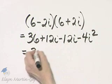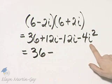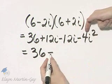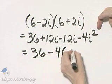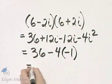And then we have 36 minus, now remember, i squared is negative 1, so be very careful. Here's this minus sign, there's my 4, and then instead of i squared, I write negative 1. And let's go ahead and simplify this.